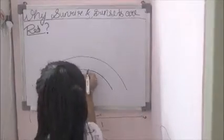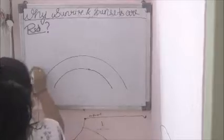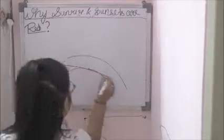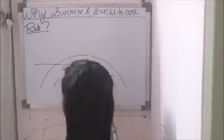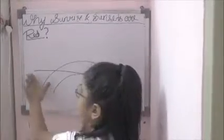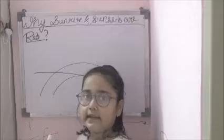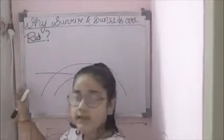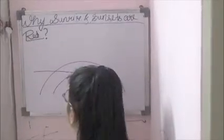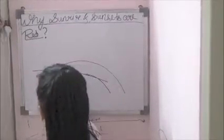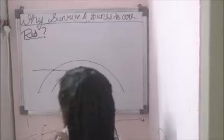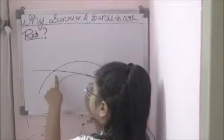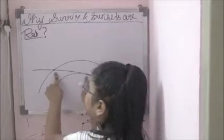Now let's take the sunrise case. There is an observer here. The light comes from the sun in the east, and through the Earth's atmosphere the sunlight has to travel a very long distance.